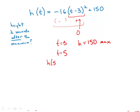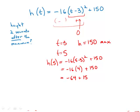So h of 5 — plug in t equals 5 — we get negative 16 times quantity 5 minus 3 squared plus 150. That is negative 16 times 2 squared, which is negative 16 times 4, plus 150. 16 times 4 is 64, so we get negative 64 plus 150.